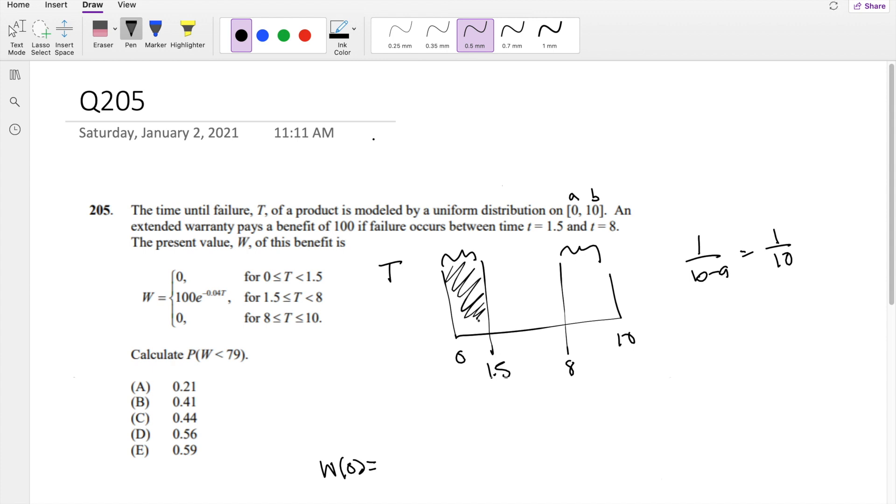Well, from here to here, the difference is 1.5 minus 0, so it's 1.5. And the difference here is 10 minus 8, which is 2. So the probability that the benefit is 0 is 1.5 plus 2 over 10, or 3.5 over 10.